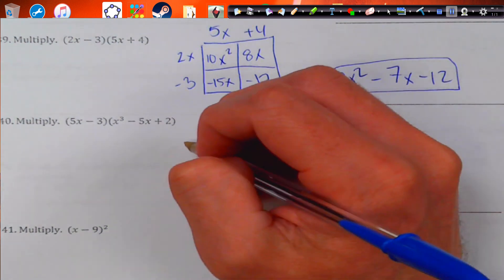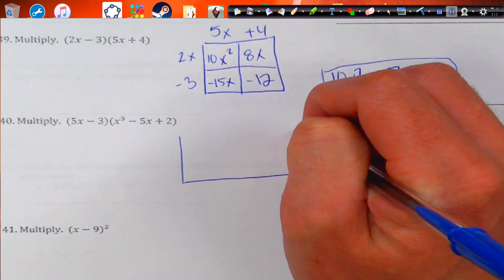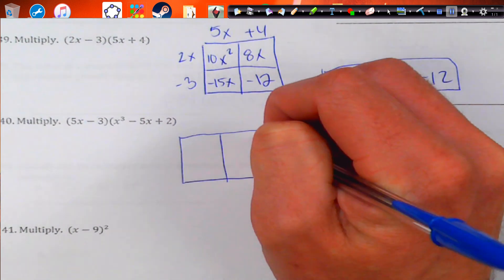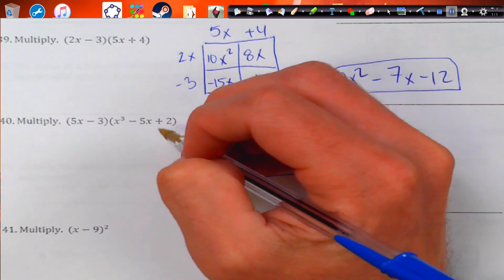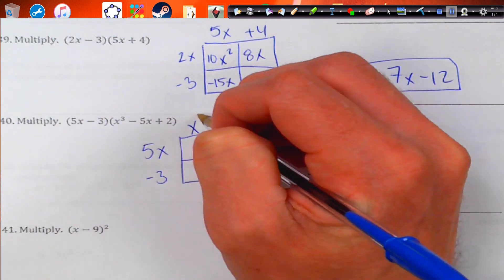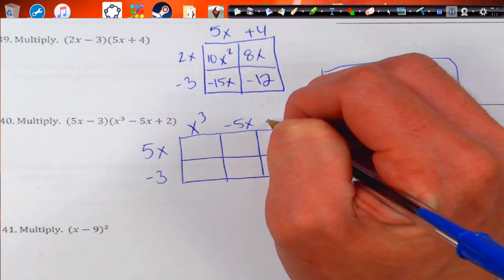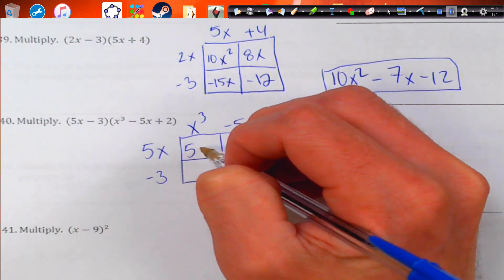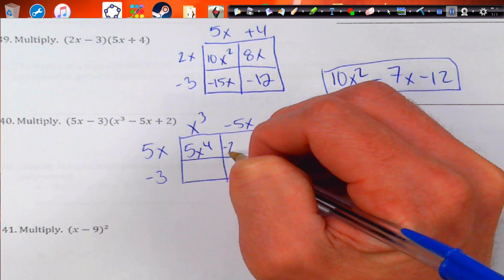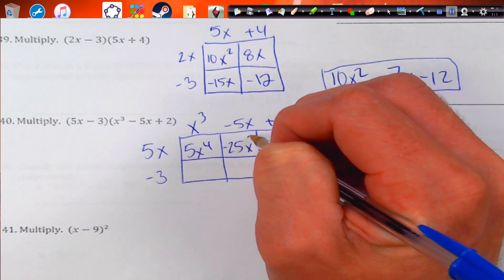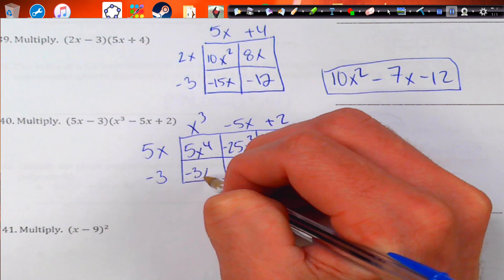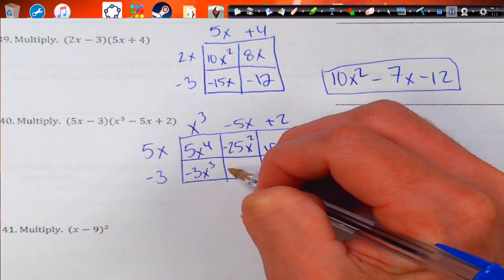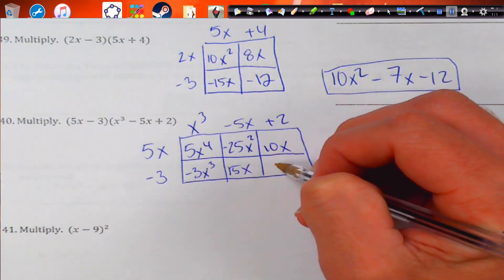This next one, we do just a bigger box. That's why we call it box and not square because it doesn't necessarily mean it's going to be 2 by 2. So, 5x and negative 3 and then x to the third, negative 5x and 2. This becomes 5x to the fourth, negative 25x squared. And this is going to become 10x. Down here, we're going to get negative 3x to the third, 15x and negative 6.